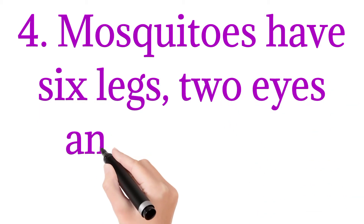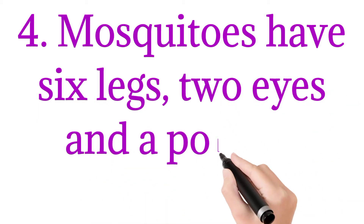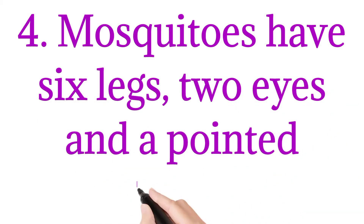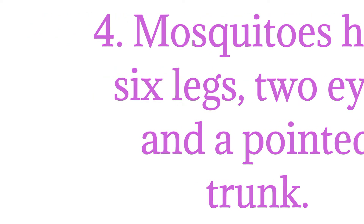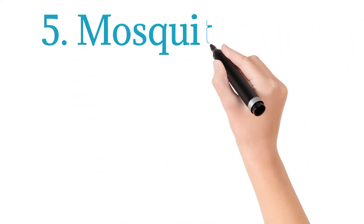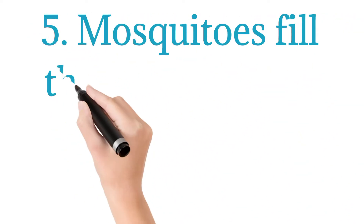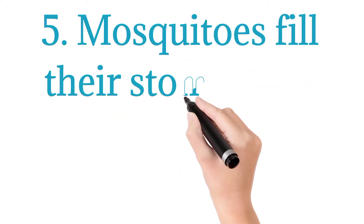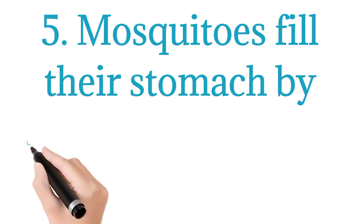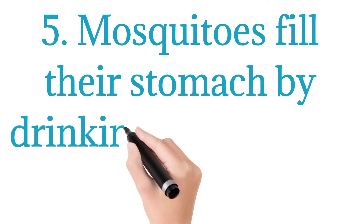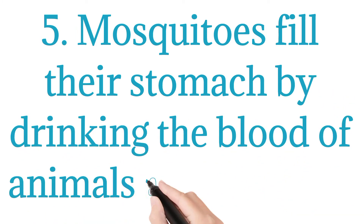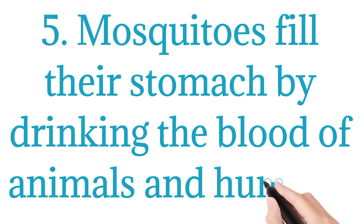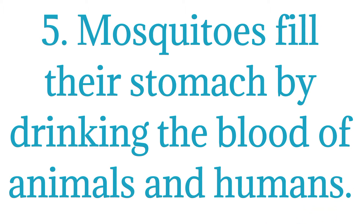Mosquitoes have six legs, two eyes, and a pointed trunk. Mosquitoes fill their stomach by drinking the blood of animals and humans.